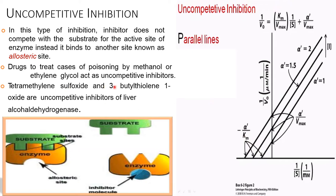Examples include tetramethylene sulfoxide and 3-butylthioline 1-oxide, which are uncompetitive inhibitors of liver alcohol dehydrogenase. In the reciprocal plot of uncompetitive inhibition, we see parallel lines instead of the intersecting lines seen in competitive inhibition. The formula is: 1/V₀ = (Km/Vmax)·(1/[S]) + α'/Vmax.